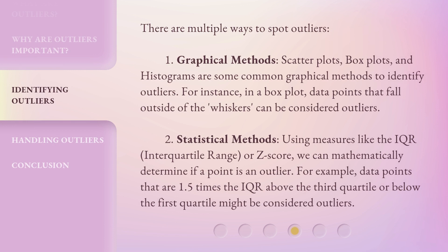There are multiple ways to spot outliers. One, graphical methods. Scatter plots, box plots, and histograms are some common graphical methods to identify outliers. For instance, in a box plot, data points that fall outside of the whiskers can be considered outliers.